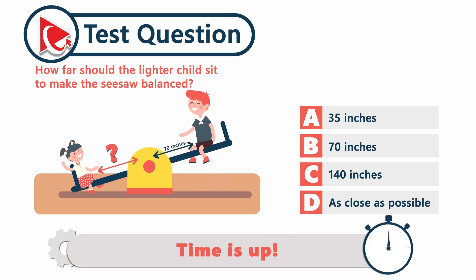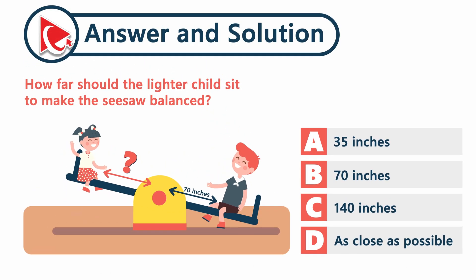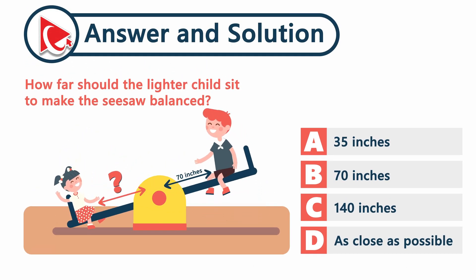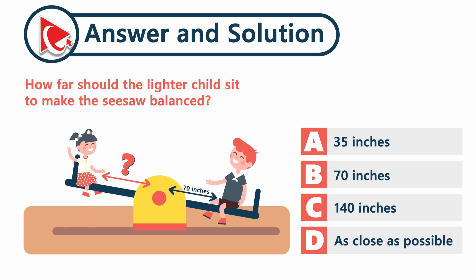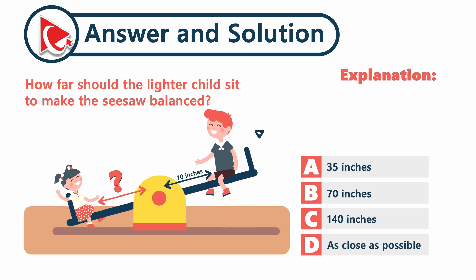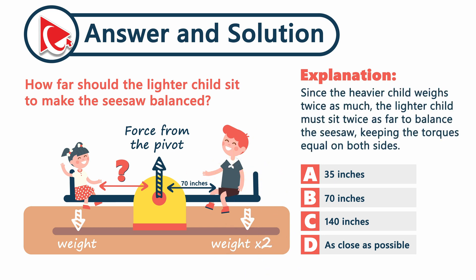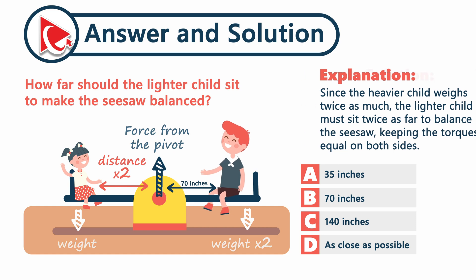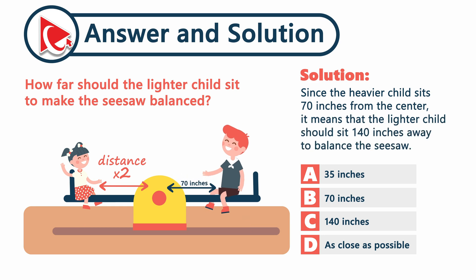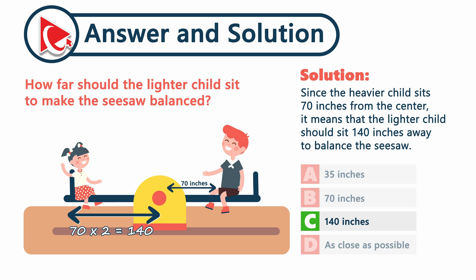Time's up. A seesaw balances when the weight and distance on both sides create equal torque. Since the heavier child weighs twice as much, the lighter child must sit twice as far to balance the seesaw, keeping torque equal on both sides. Since the heavier child sits 70 inches from the center, the lighter child should sit 140 inches away. The correct answer is choice C — 140 inches.